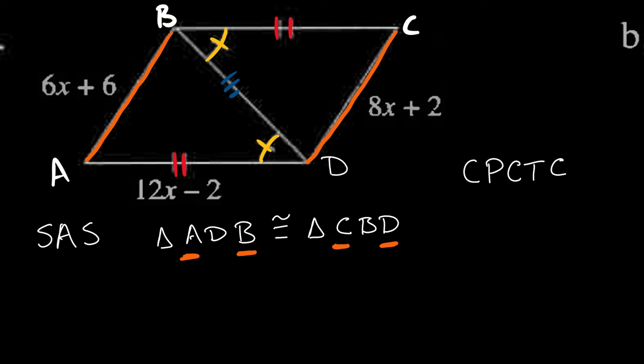So CPCTC means if you've got congruent triangles, their corresponding parts are congruent. Because these sides marked with single tick marks are congruent by CPCTC, their lengths have to be equal. So 6x + 6 must equal 8x + 2.